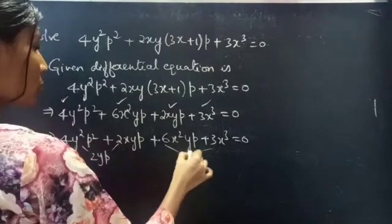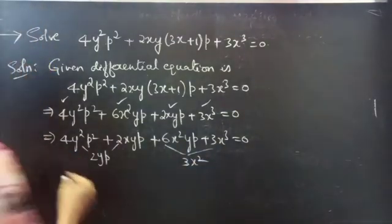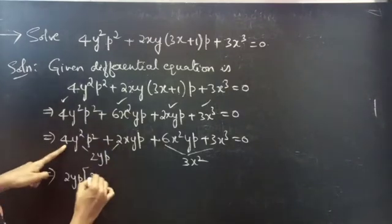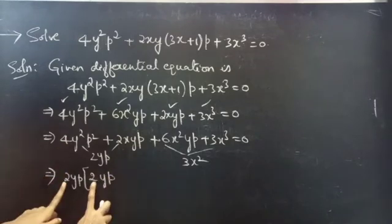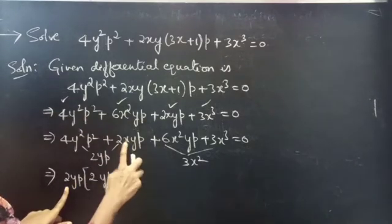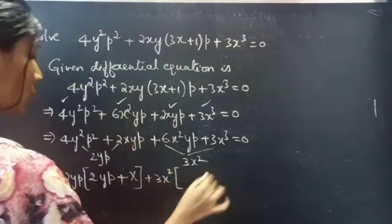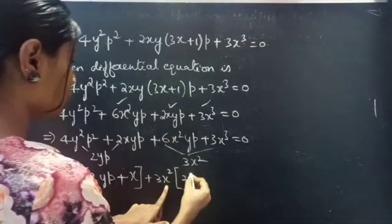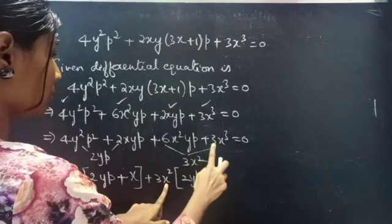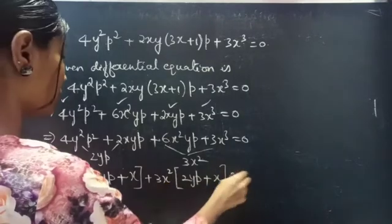From the first two terms, you can take 2yp common, giving 2yp(2yp + x). And from the last two terms, take 3x squared common, giving 3x squared(2yp + x cubed), equals 0.